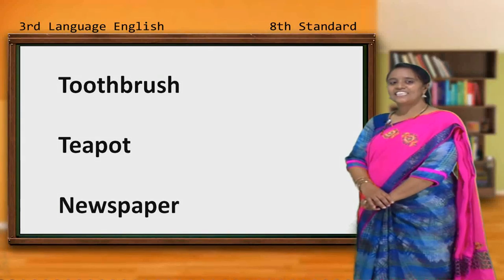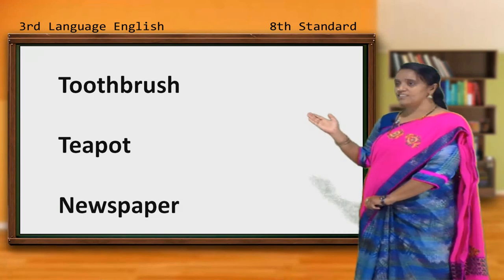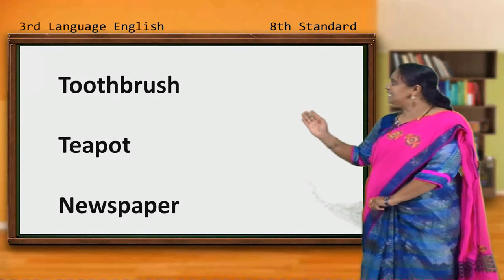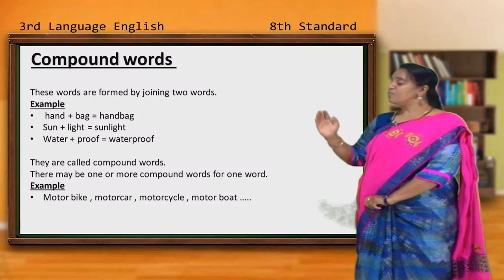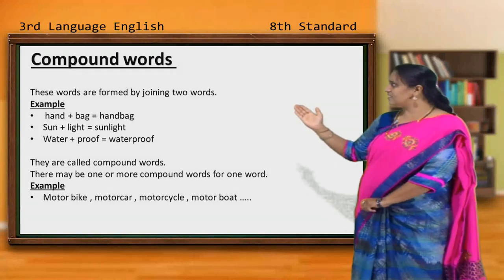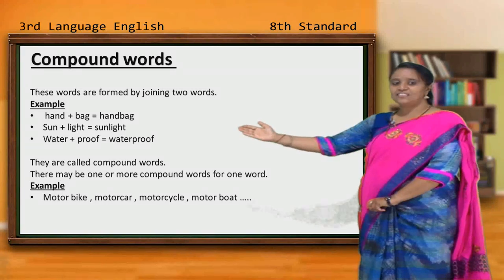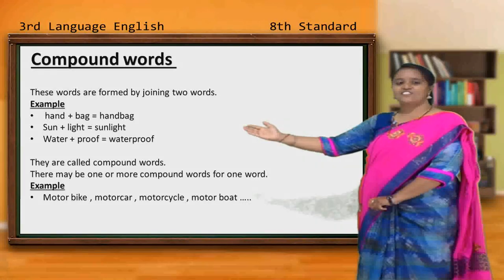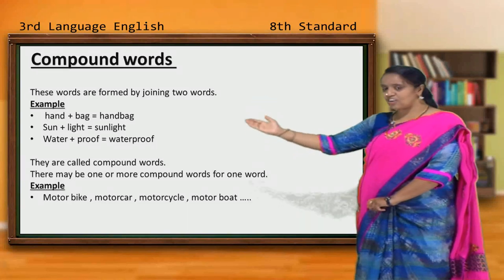Earlier, there were two different words. Now, after matching, they have become one word. Isn't it? These words are called compound words. Let us see the definition of compound words and many examples. Listen carefully. Compound words are the words formed by joining two words. Example: hand plus bank — handbank. Sun plus light — sunlight. Water plus proof — waterproof. They are called compound words.